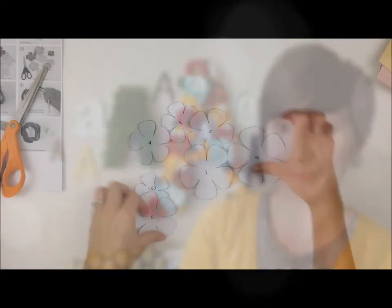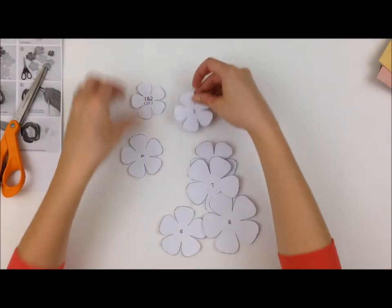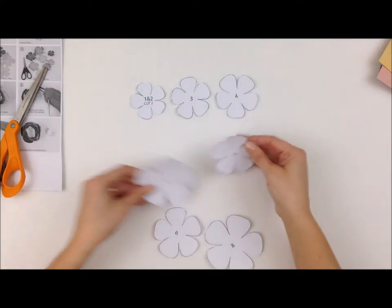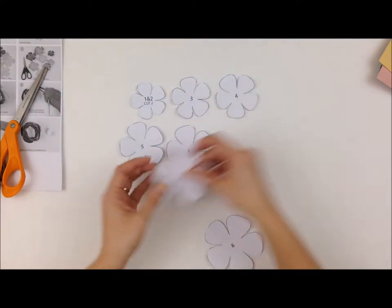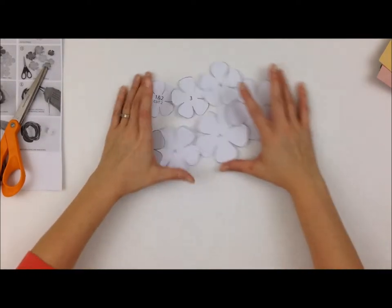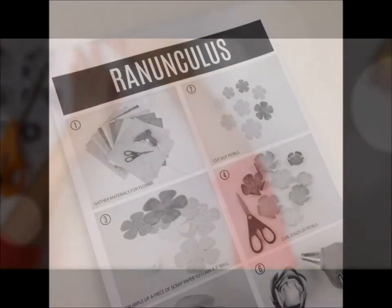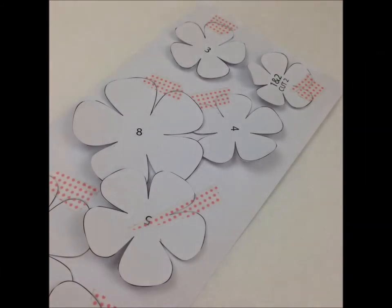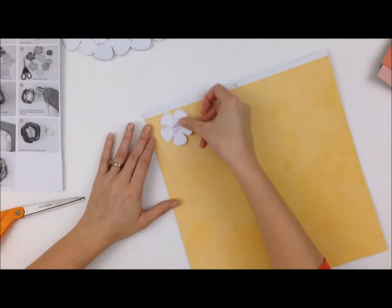So I've already cut out the flower templates and I'm laying them out here so that you can see what they look like all in a row. They're numbered and it tells you exactly how many of each piece you want to cut out. Just a quick tip: save your instructions for future reference and on the back side use washi tape to attach the template pieces so that the next time you want to make this flower you know exactly where all those pieces are.